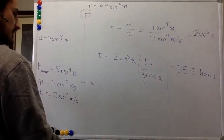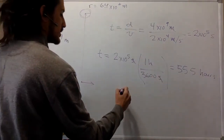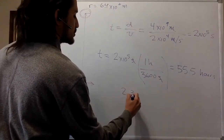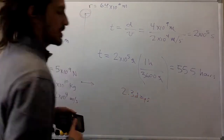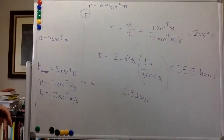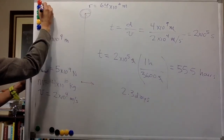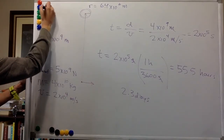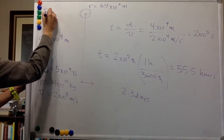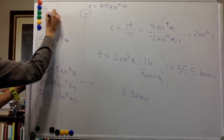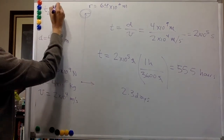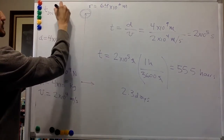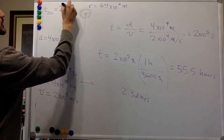If you want it in days, that's 2.3 days. So the 'do nothing' time is 2.3 days.